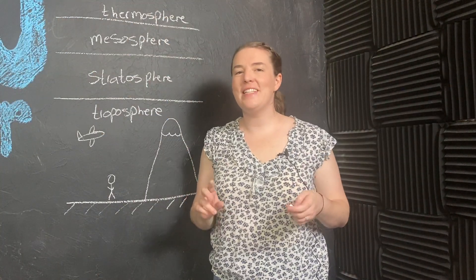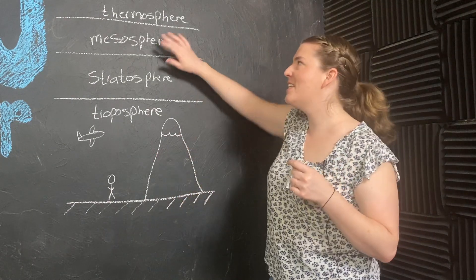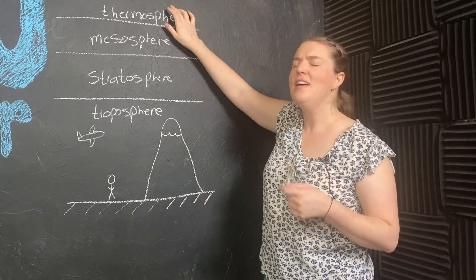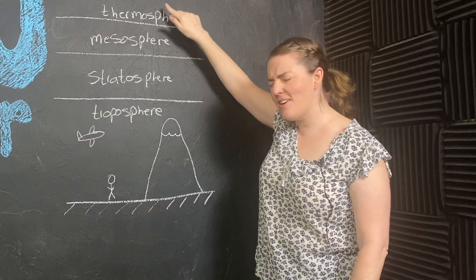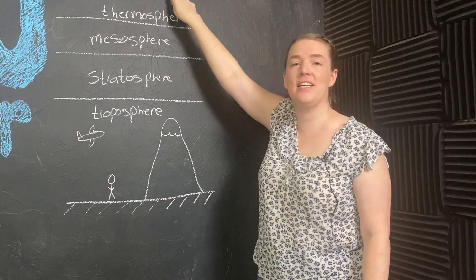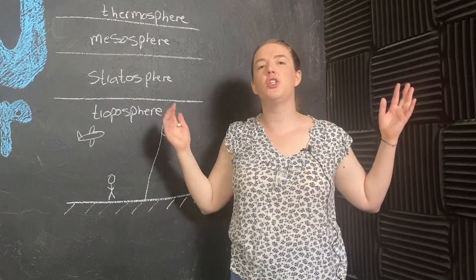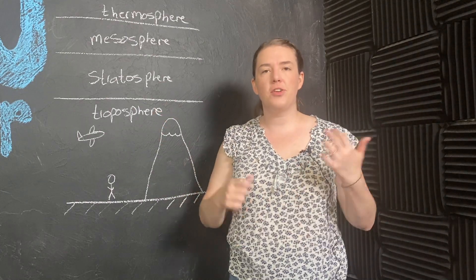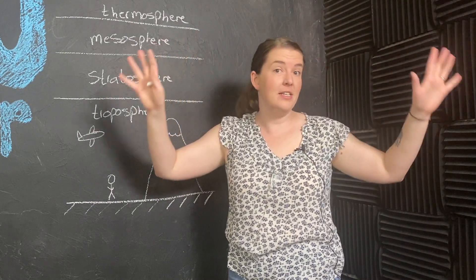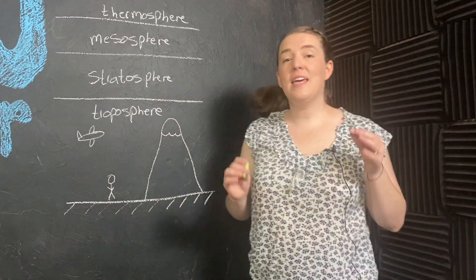And I do want to make a point to say that there's not some distinct line up here that's like, this is the thermosphere, and this is our atmosphere, and then this is space. There's not a hard boundary, it's very much a gradient, and the thermosphere just sort of dissolves into space eventually.